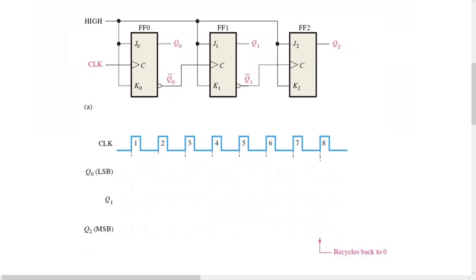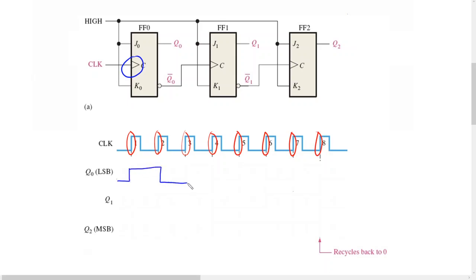Creating the timing diagram for a three-bit asynchronous binary counter follows the same steps as for the two-bit counter. We start at Q0, which is the output of flip-flop 0. Flip-flop 0 is triggered by the external clock input and is a positive edge-triggered device, so on every positive edge it toggles its state. Flip-flop 1 is also a positive edge-triggered device, but its clock source is not-Q0. Since it needs a positive-going edge to trigger and is connected to not-Q0, the falling edge of Q0 becomes the rising edge of not-Q0.